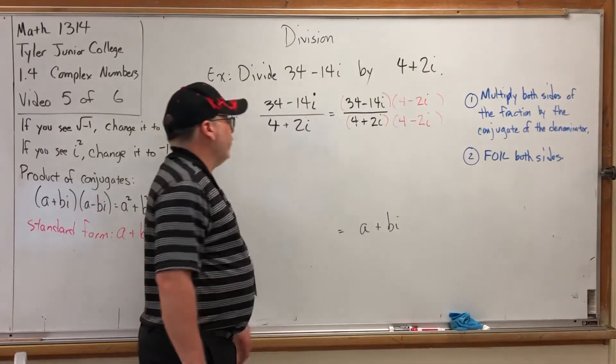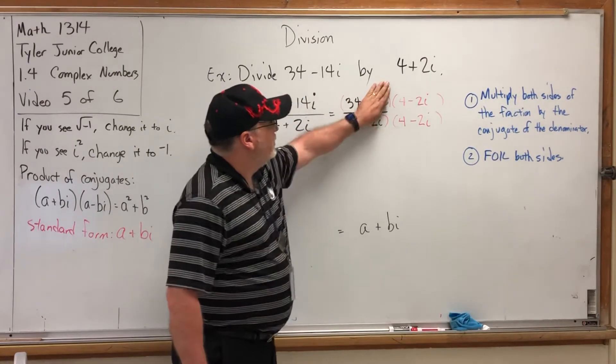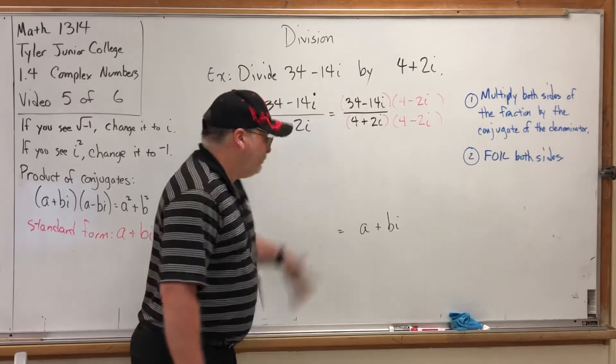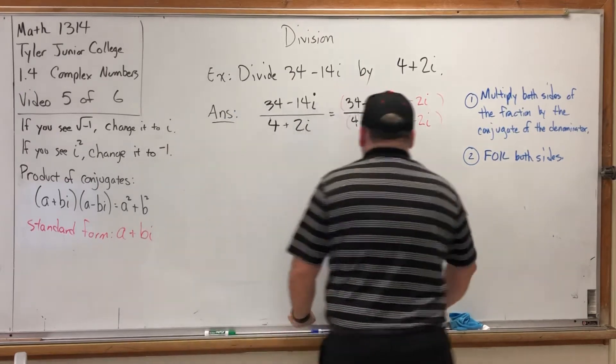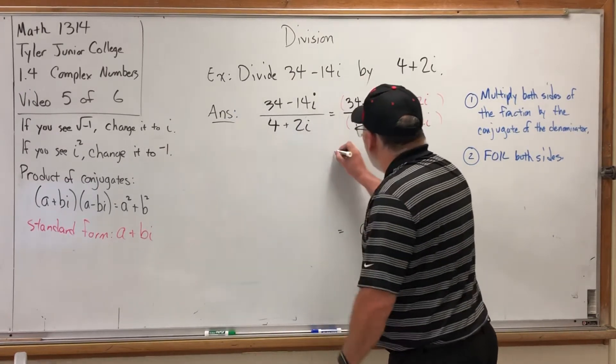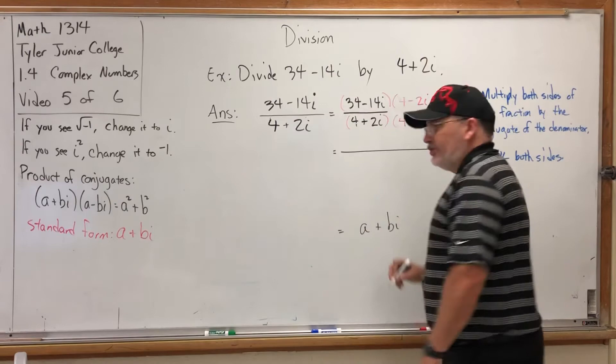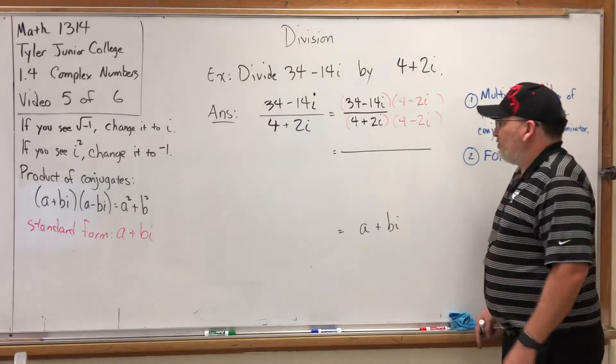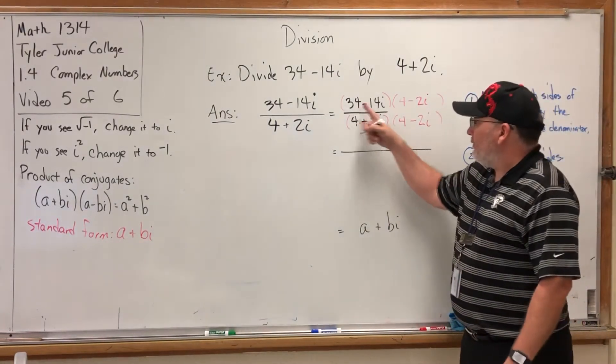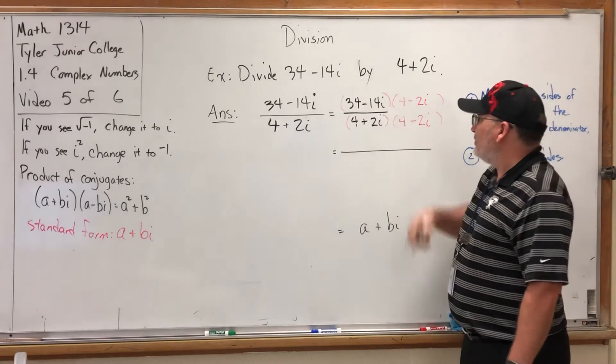For example, if the numerator were just 34, then I would just distribute the 34. But let's FOIL these. As we do more and more FOIL problems I will do them more efficiently.